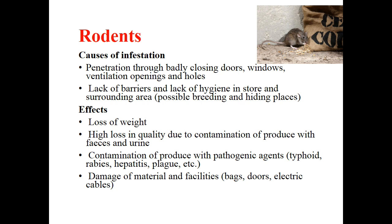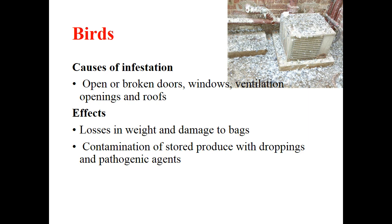The effect of rodents includes loss of quantity and quality through contamination with fecal matter and urine, and contamination with pathogenic agents like typhoid, rabies, hepatitis, and plague — there are a number of diseases associated with rats. There is also damage to materials and facilities such as bags, doors, and electric cables. For birds, causes include open or broken doors, windows, ventilation openings, and roofs, leading to heavy weight loss, damage to bags, and contamination with droppings and feathers carrying pathogenic agents.